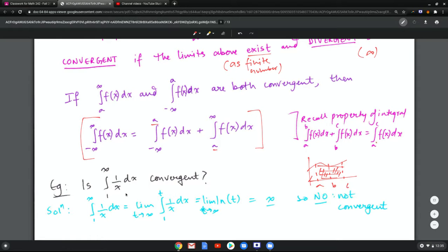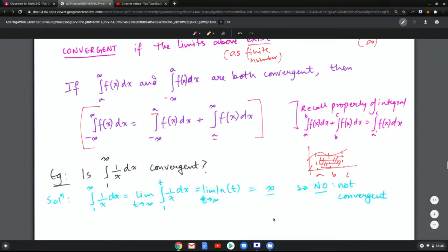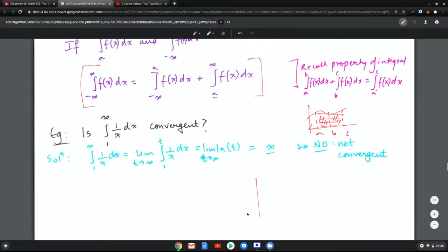Now what about 1 over x? Let's do the same thing, end up with log t which is infinity, so no, it is not convergent. So that's interesting because 1 over x has a similar shape but it's just not as steep. So in case of 1 over x, if you take this area even though it's going close, this area is infinite.